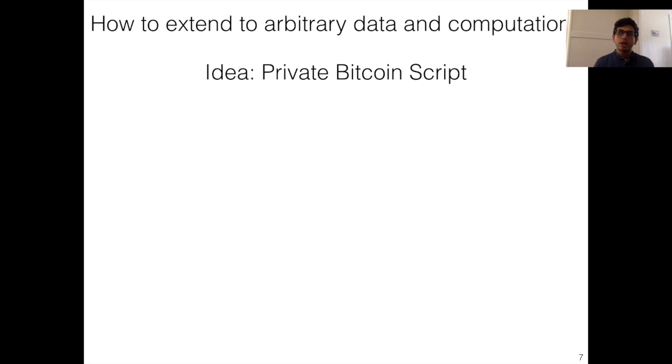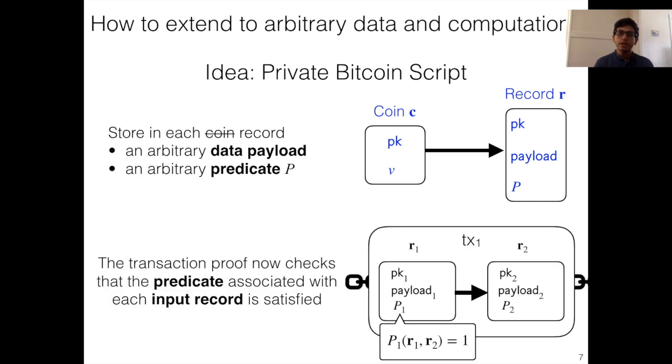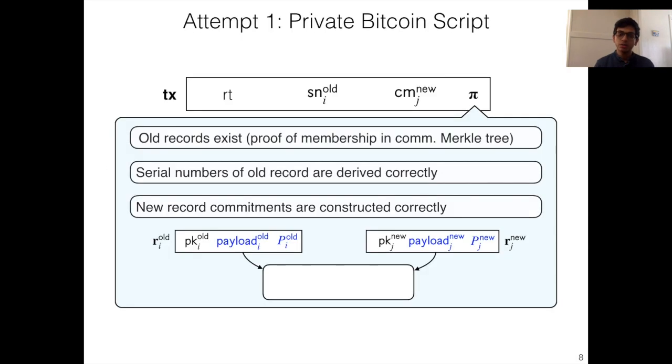Okay, so a natural idea is to look at how Bitcoin achieves this. What Bitcoin does is every coin in Bitcoin is associated with a particular Bitcoin script, and to spend a coin, you have to ensure that the script for that coin is satisfied. So to construct a private analog, we can proceed similarly. So now instead of coins, we consider arbitrary data records, which contain not values, but arbitrary data payloads, and have an associated predicate or script P. And what the transaction proof will now guarantee is that the predicate associated with every record that's being spent is satisfied. So in this example, the transaction will assert that P1 is satisfied. Now in terms of implementation, this would look like the transaction proof just asserting that for every input record, the predicate for that input record is satisfied.